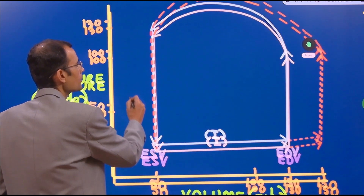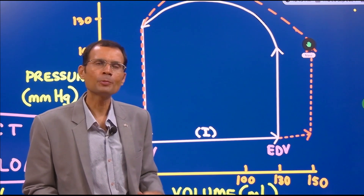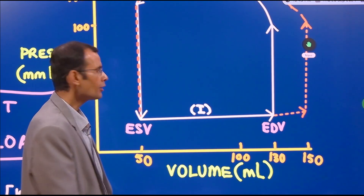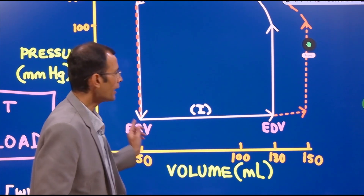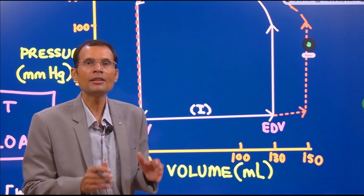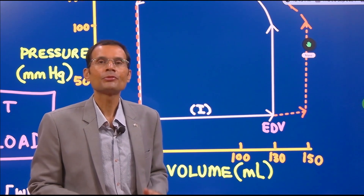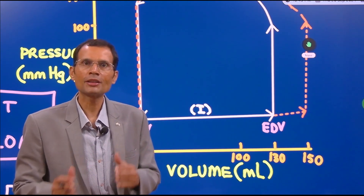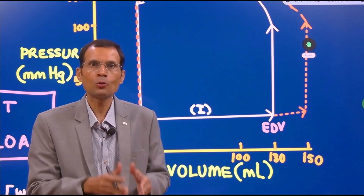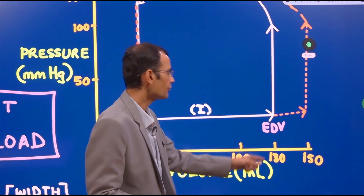Let's see those effects on the LVPV loop. Shown in white is the normal LVPV loop in a normal cardiac cycle. Phase number one, if you recall, is the phase of filling and the diastole is ending at this point. This is called the end diastolic volume. Normally end diastolic volume is about 125 to 130 ml — in this graph it's about 130 ml — and it is the preload on the left ventricle. End diastolic volume reflects the preload on the left ventricle.